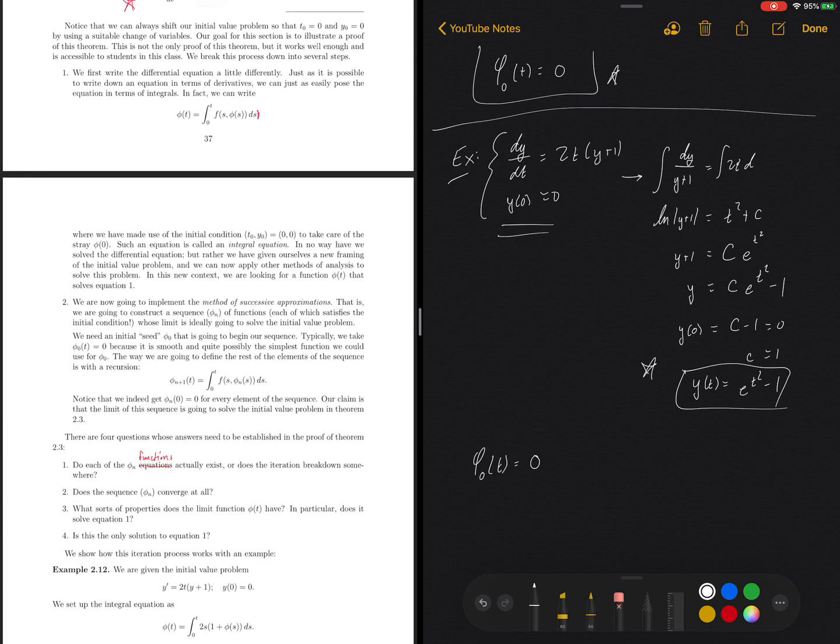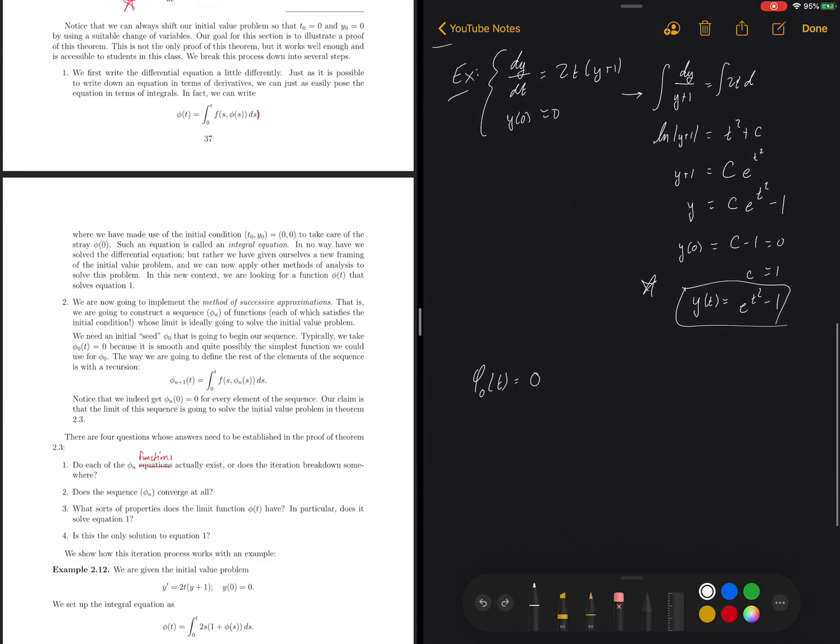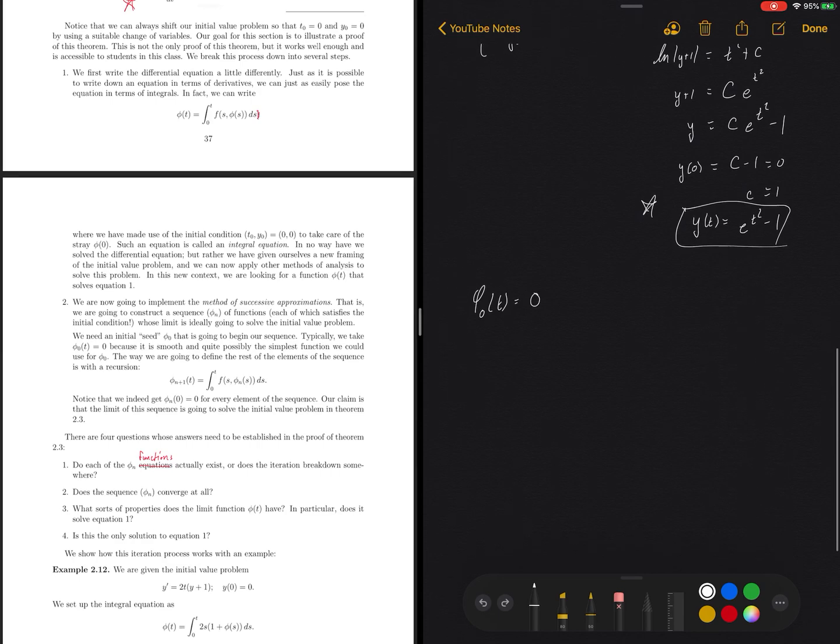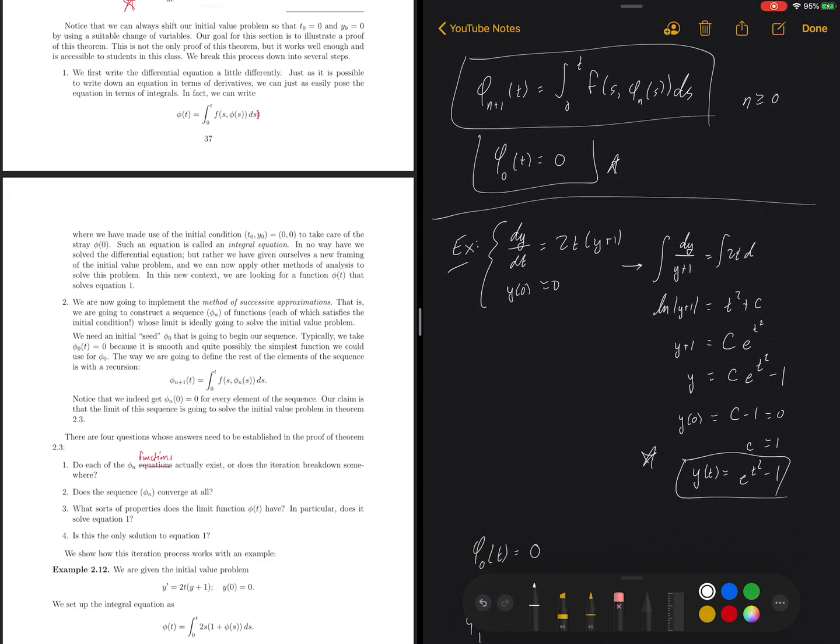So as per the iteration scheme, phi zero, our starting point is going to be the zero function. This is a continuous function. In fact, it's a smooth function that satisfies this initial condition, right? If I plug in t equals 0, I will get 0. So this is our first approximation to a solution, y.